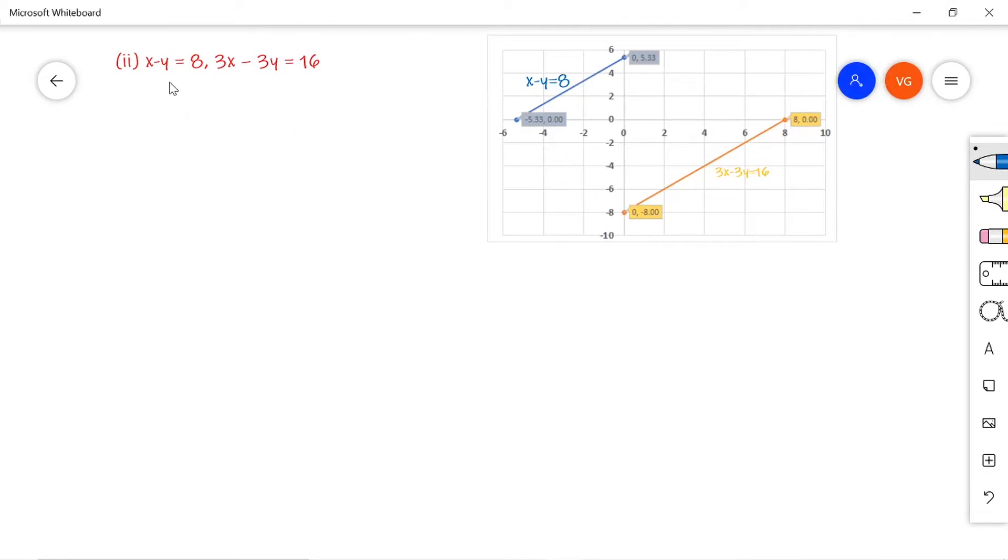The given set of equations are x minus y is equal to 8 and 3x minus 3y is equal to 16. So we know the first step is to write down the given equations in the standard form. So x minus y minus 8 is equal to 0, and 3x minus 3y minus 16 is equal to 0.